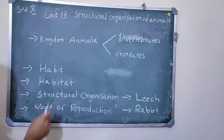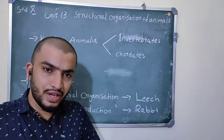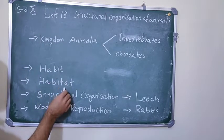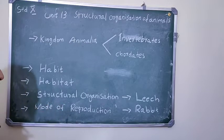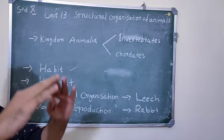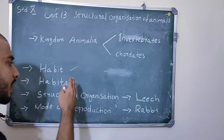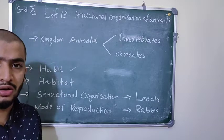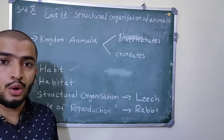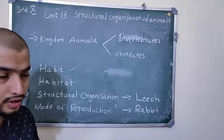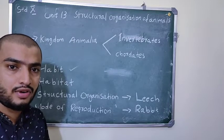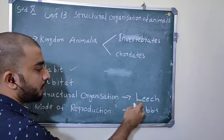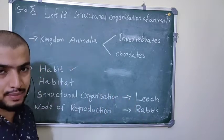Animals on this biosphere show wide diversity because of habit, habitat, structural organization, and mode of reproduction. Habit means the architecture or general form of the animal. Habitat means where these animals are found. Structural organization ranges from cellular level, tissue level, organ level, to organ system level. In this chapter, we will discuss all details about leech and rabbit.